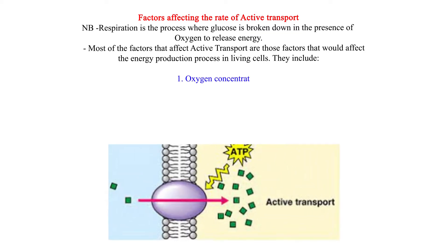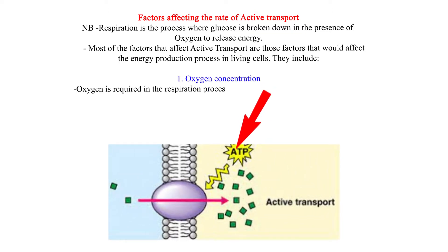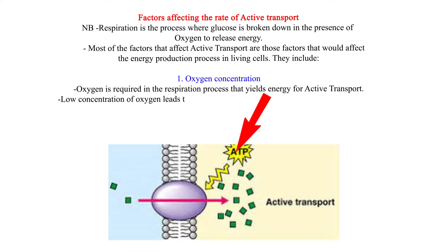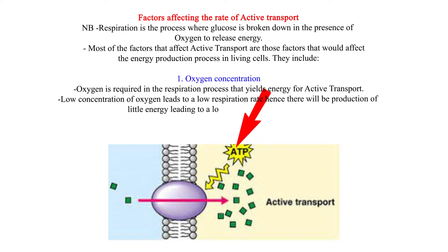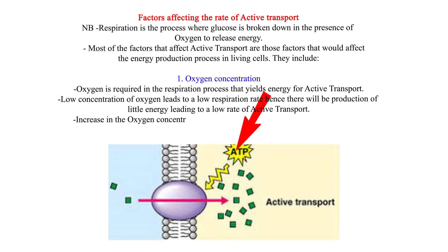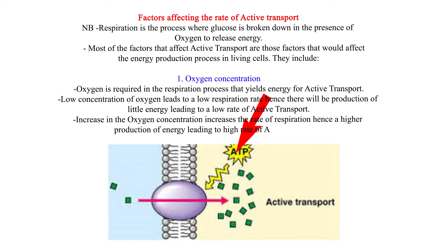1. Oxygen Concentration. Oxygen is required in the respiration process that yields energy for active transport. Low concentration of oxygen leads to a low respiration rate, hence there will be production of little energy, leading to a low rate of active transport. An increase in oxygen concentration increases the rate of respiration, hence a higher production of energy, leading to a high rate of active transport.